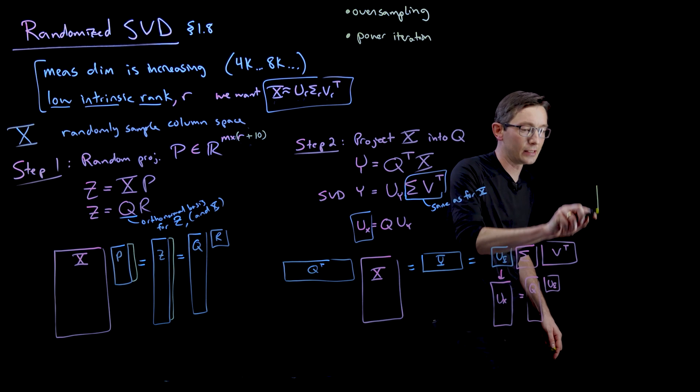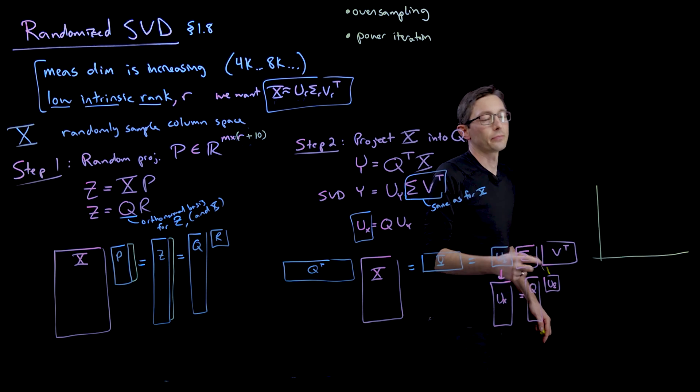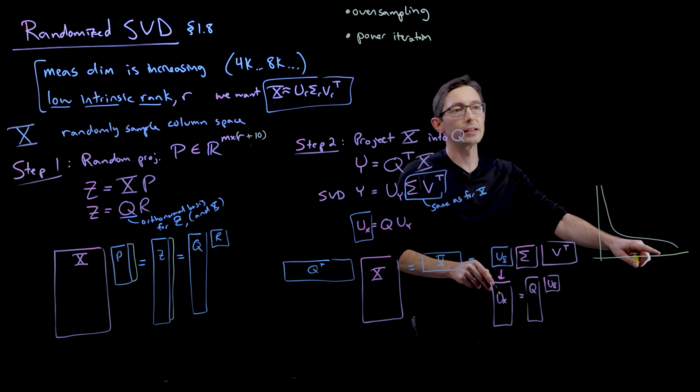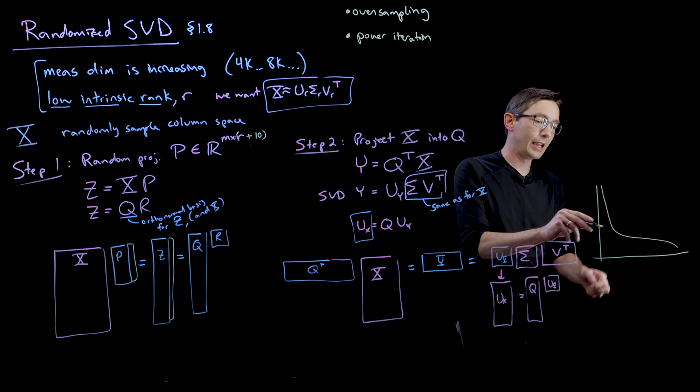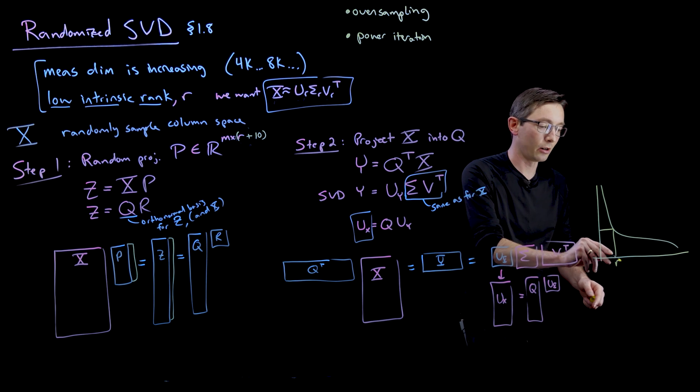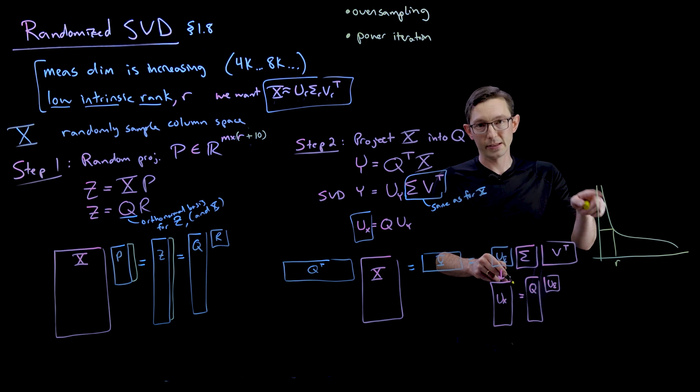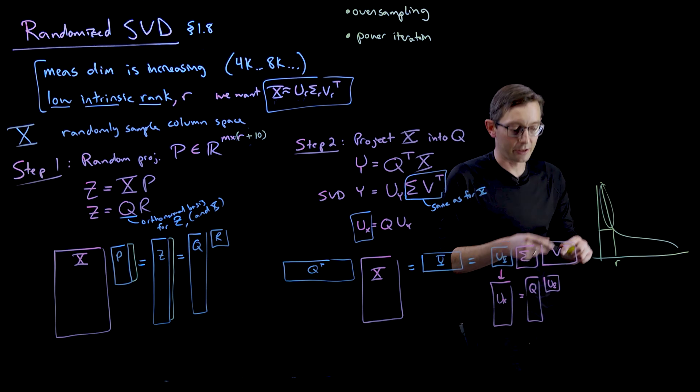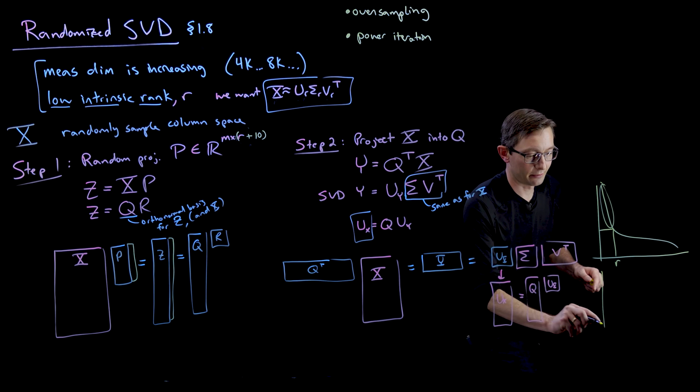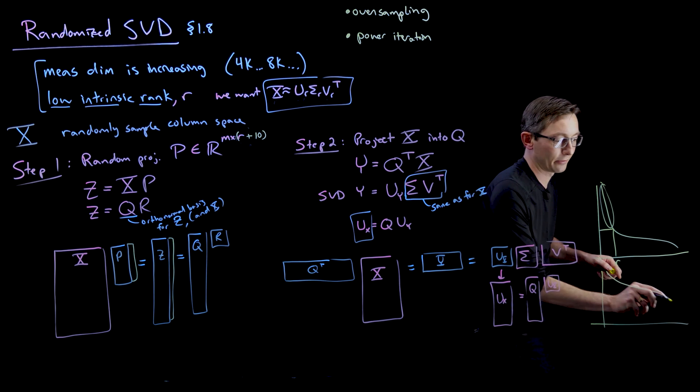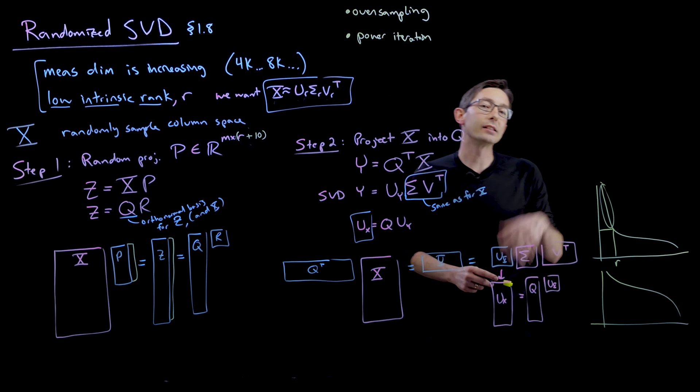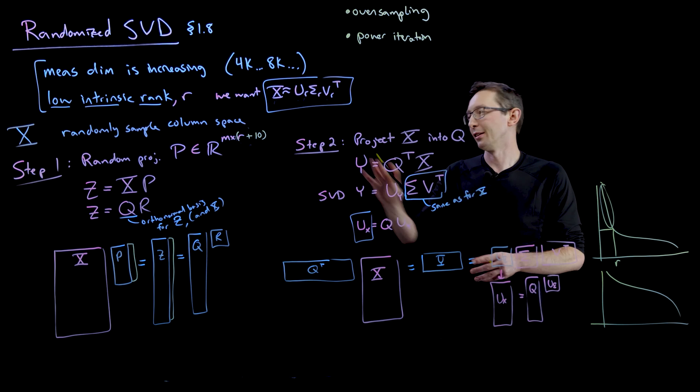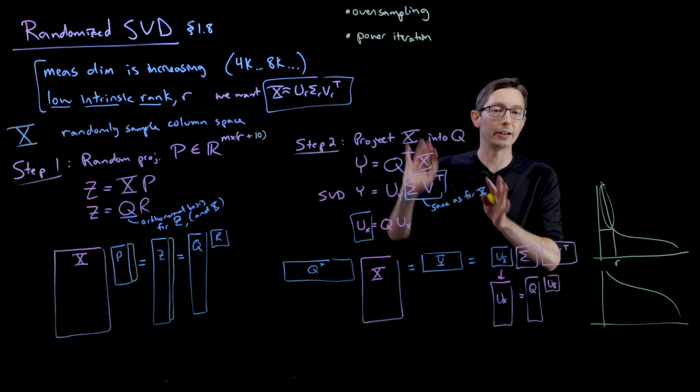In lots of cases what you want is for your data matrix to have really low rank structure and then some small singular values, in which case you can probably approximate the dominant r singular values using these methods. But oftentimes what your data matrix actually looks like is you have a much slower drop-off in singular values. So what you can do is by taking powers of X—and X is a rectangular matrix, I'll tell you what I mean by taking powers of X in a minute—you can essentially...